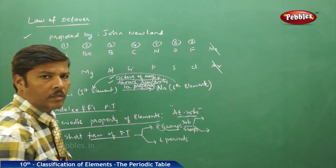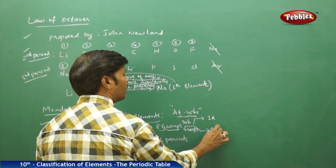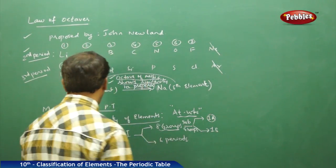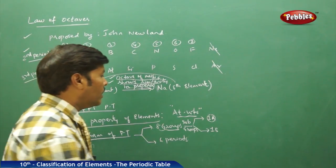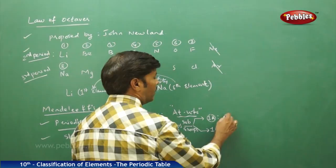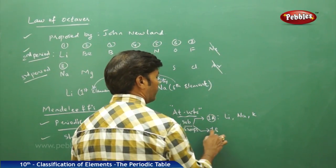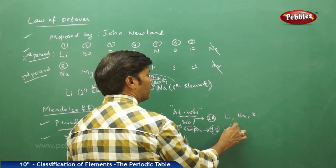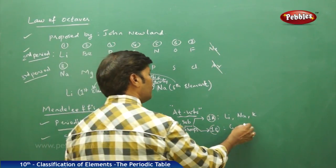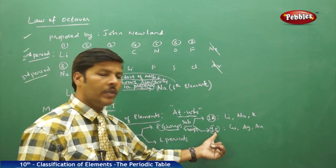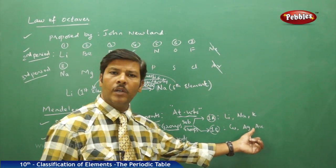These subgroups were labeled as 1A and 1B groups. In the 1A group of Mendeleev's periodic table, we have lithium, sodium, and potassium. In the 1B group, we have copper, silver, and gold.